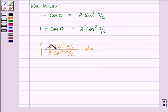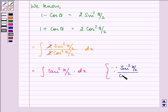Further, on simplifying it, we have it equal to integral of tan square x by 2 into dx. Because sin square x by 2 divided by cos square x by 2 can be written as tan square x by 2. Right?